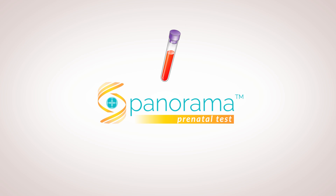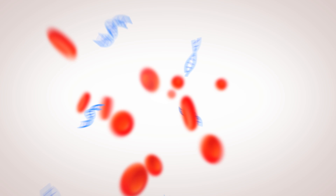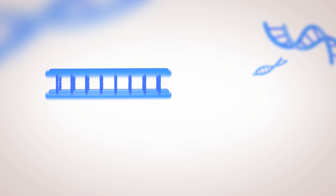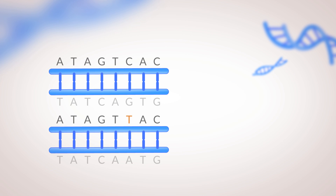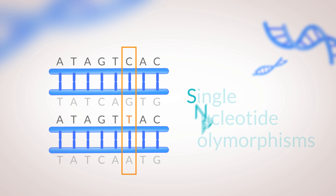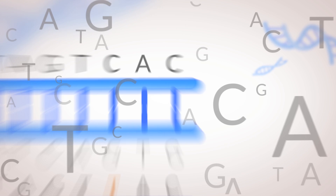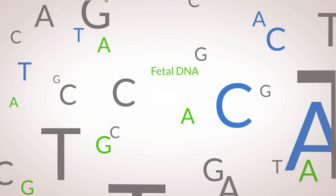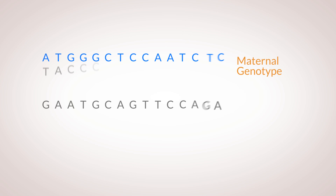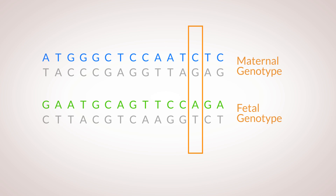Once the lab receives the sample, the DNA is amplified on a sequencing machine, which allows for analysis of the specific parts of DNA that are unique to each person. These parts are called single nucleotide polymorphisms, or SNPs. The Panorama test looks at SNPs from both the mother and fetus. By looking at these SNPs, the test can determine parts of the mother's genotype as well as parts of the fetus's genotype.